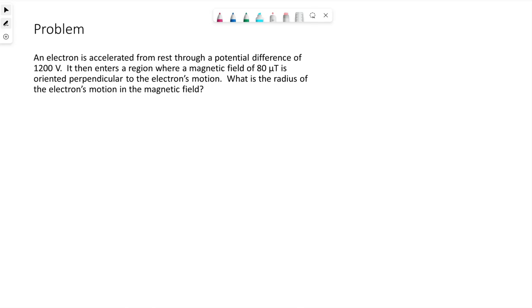Alright, so to have kind of a visual here, we have this electron, a negative charge. It's in a region where there is an electric field, so there's a potential difference, delta V, coming all in this region, potential difference that causes it to speed up.